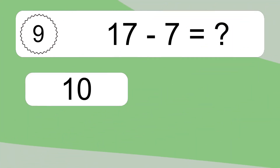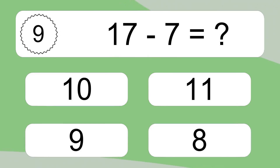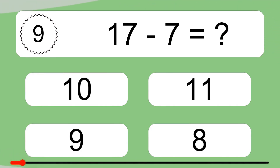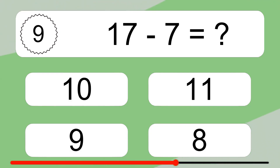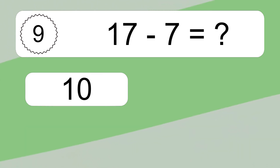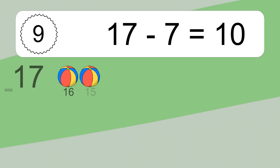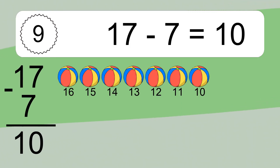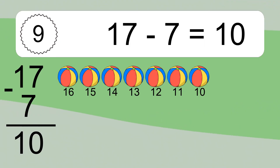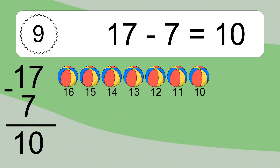17 minus 7 equals what? 17 minus 7 equals 10. Let's count it: 16, 15, 14, 13, 12, 11, 10.